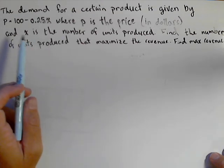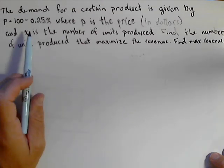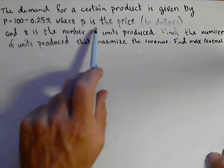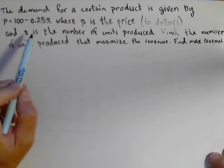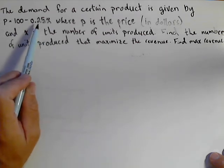Let's say the demand for a certain product is given by P = 100 - 0.25x, where P is the price in dollars and x is the number of units produced. So the more units they produce, the more the price goes down.